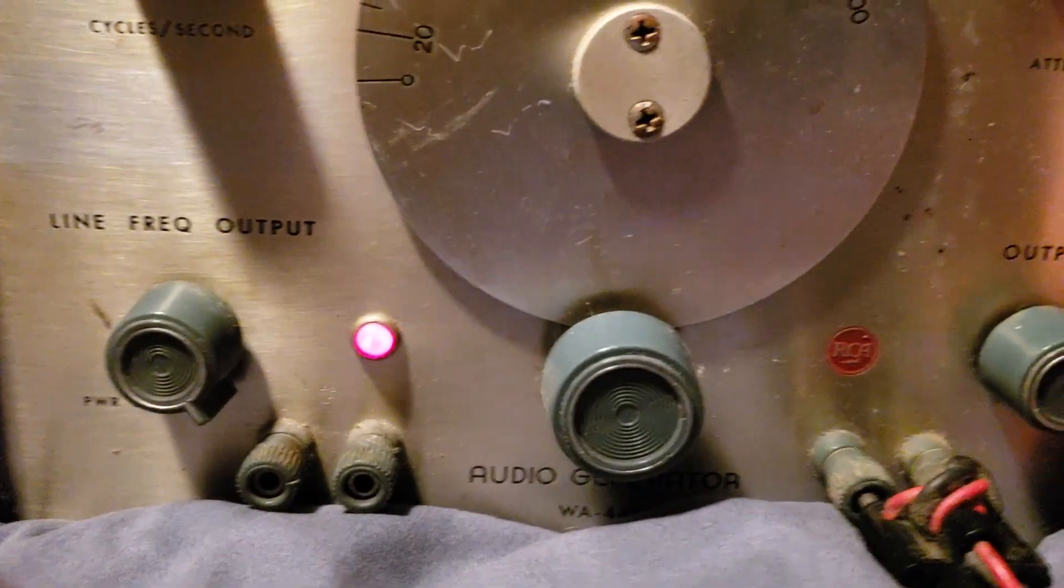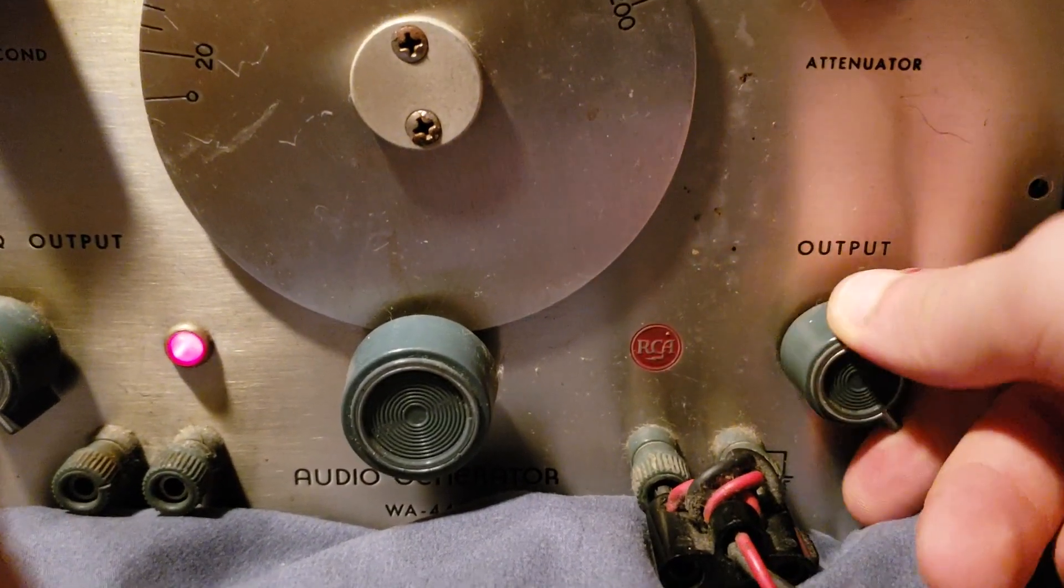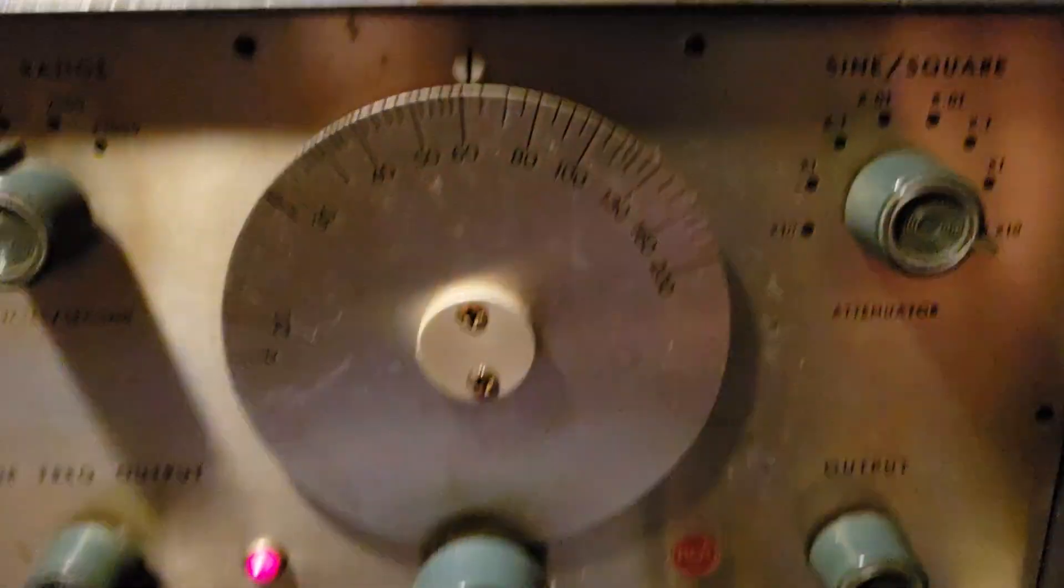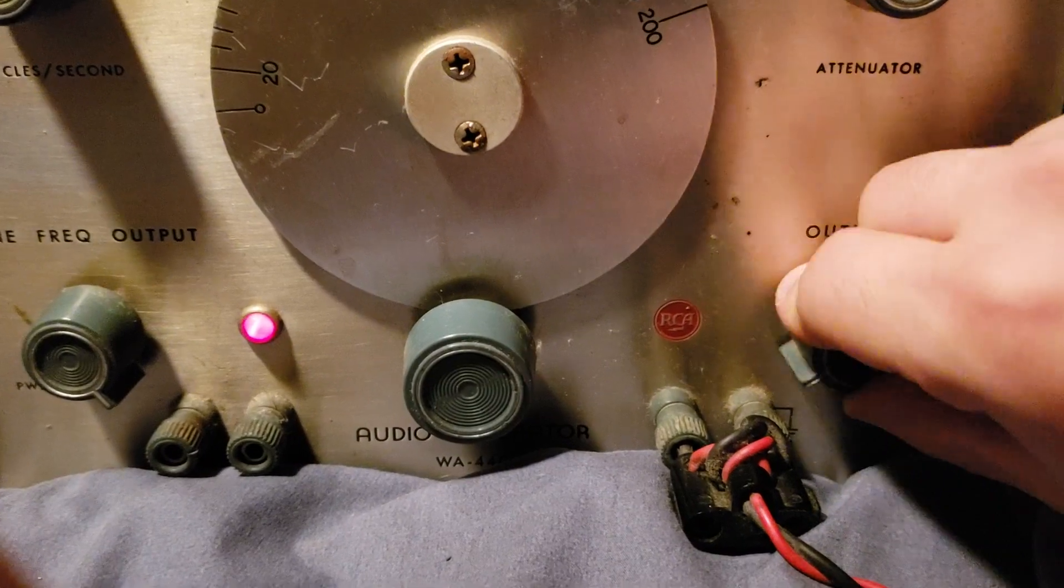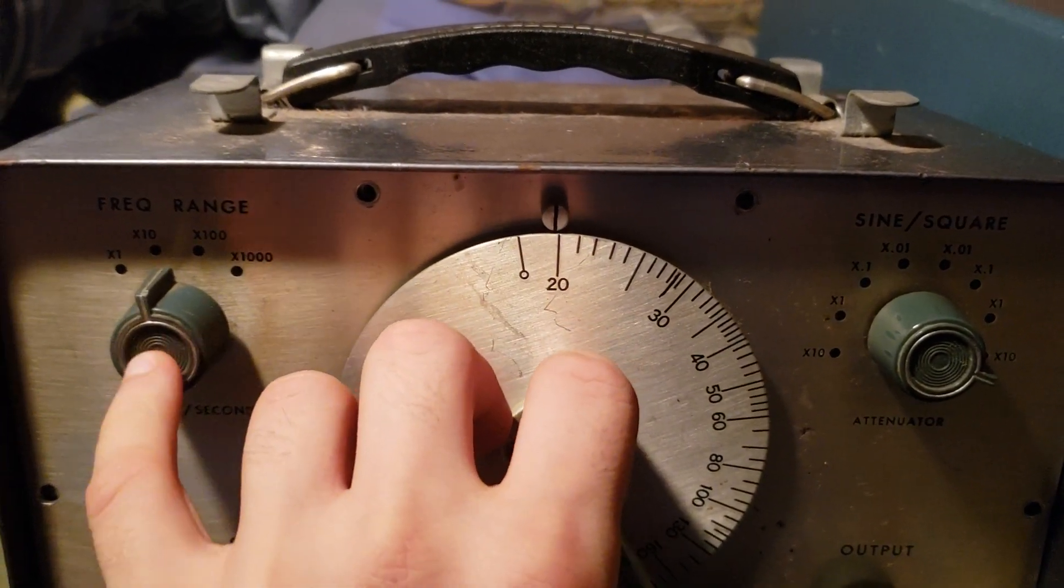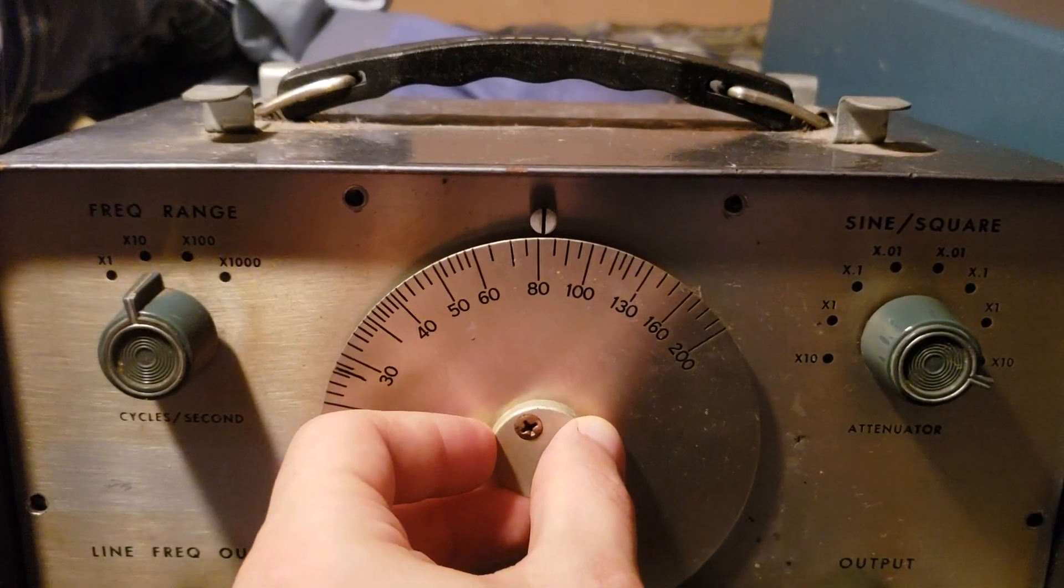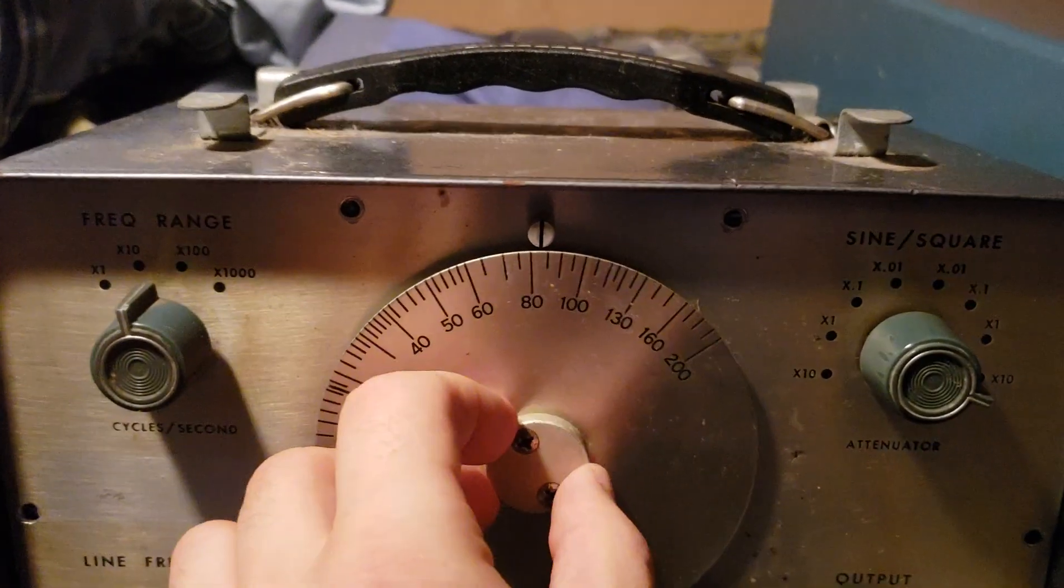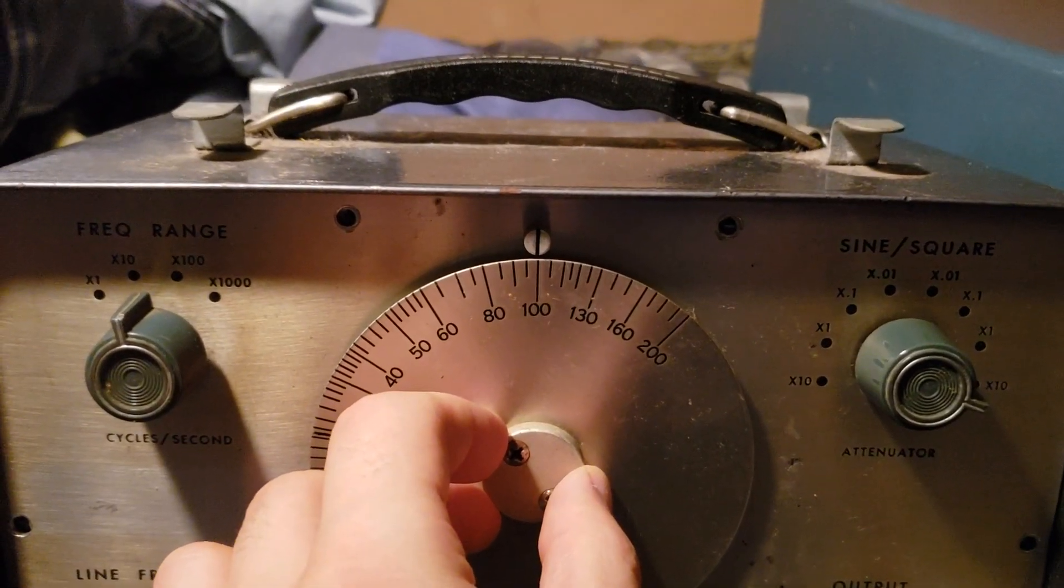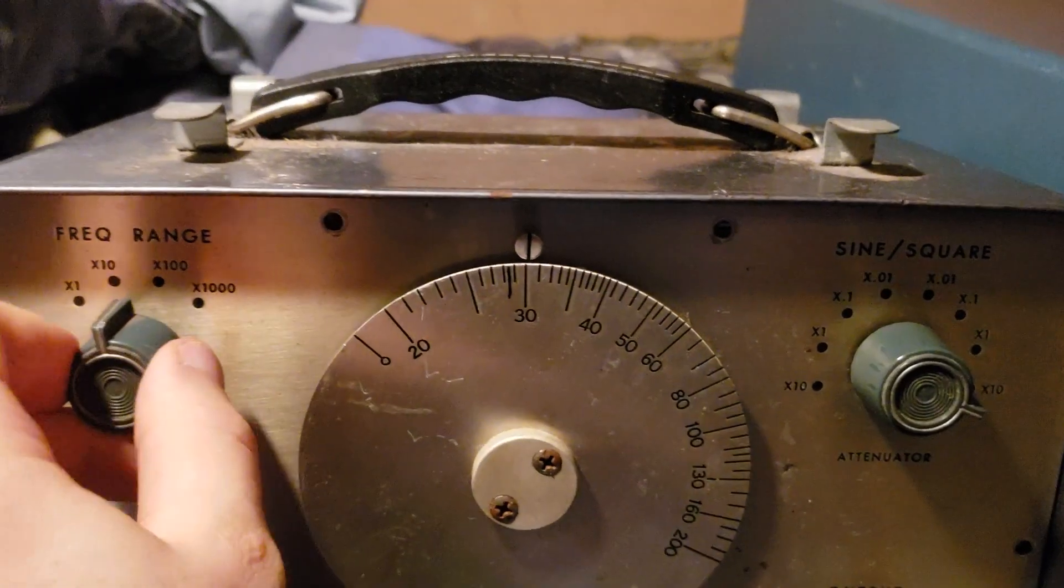You also have your output knob here that changes the volume. Here it gets quieter, here it gets louder. And we also have a sine and square wave. You can hear it gets quieter and louder with the output. There's 200 Hz. There's 800 Hz. Right about there is a kilohertz, or a thousand hertz.